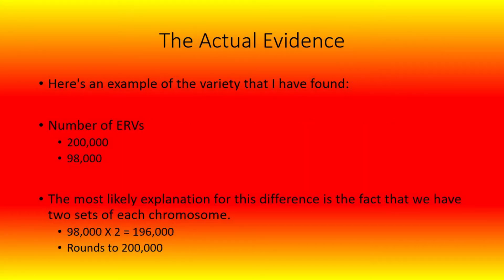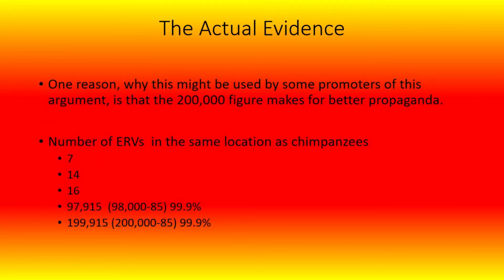Here is an example of the variety found. Number of ERVs: 200,000 or 98,000. The most likely explanation for this difference is the fact that we have two sets of each chromosome, and 98,000 times 2 is 196,000, which rounds to 200,000. The number of ERVs at the same location as chimpanzees varies: 7, 14, 16, 97,915 (that's 98,000 minus 85), or 99.9%, and 199,915 (or 200,000 minus 85), also for 99.9%.